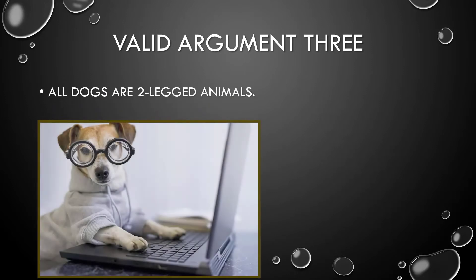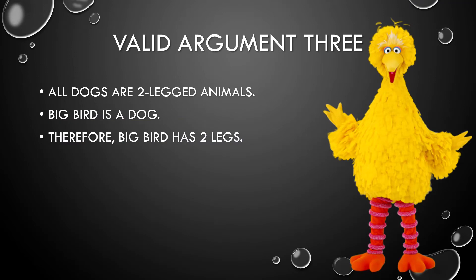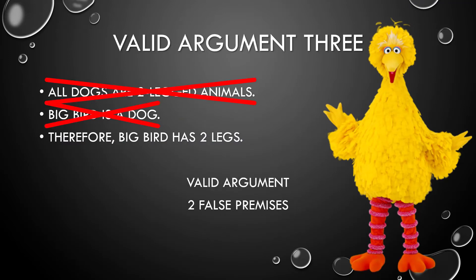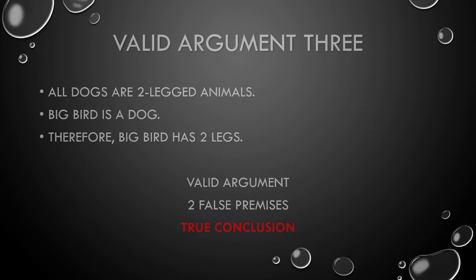But here is the bizarre one: 'All dogs are two-legged animals; Big Bird is a dog; therefore Big Bird has two legs.' It's a valid argument — we have two false premises, yet we still end up with a true conclusion. Remember, validity merely says: if the premises are true, the conclusion must be true. It's a logical mistake to think that premises not being true means the conclusion must not be true. Validity doesn't say anything about false premises guaranteeing anything.